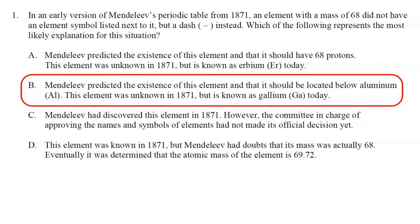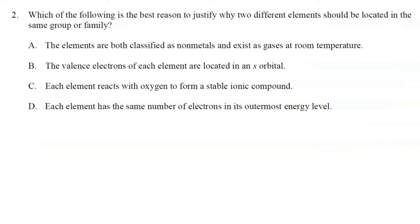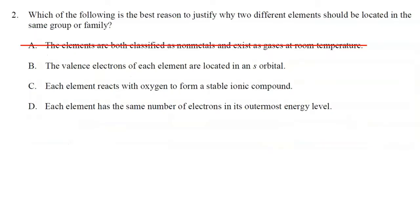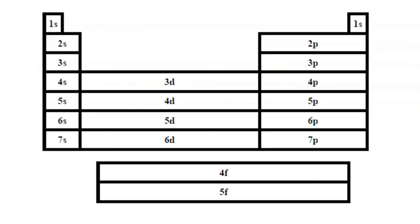Number two: which of the following is the best reason to justify why two different elements should be located in the same group or family? Choice A says the elements are both classified as nonmetals and exist as gases at room temperature. As you can see, nonmetals include a wide variety of elements with very different chemical properties, so just being a nonmetal or a gas is not specific enough. Choice B says the valence electrons of each element are located in an s orbital.